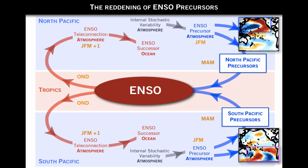We can take those precursor indices in the north and south and make a correlation with the SST in the January-February-March period. The correlation patterns show that these two patterns are not similar at all. In the north, you get this horseshoe pattern, which has been discussed in the literature originally by Penland et al. as the optimal perturbation pattern of El Niño. In the south, you get a tripole structure which is a known ENSO precursor from the south, discussed in Zhang et al., 2014.